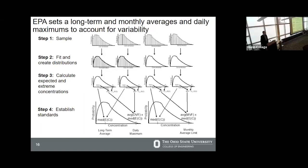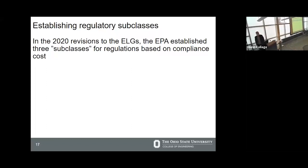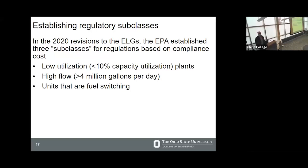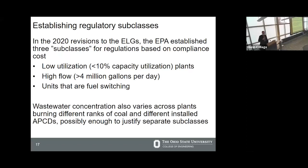The EPA also uses regulatory subclasses — types of facilities that for economic efficiency might need different treatment. In the 2020 revisions, the EPA established three subclasses: low-utilization plants using less than 10% of capacity, a single high-flow plant producing more than 4 million gallons of wastewater per day, and units retiring or fuel-switching by the end of 2028. We can use a model like this to explore other ways of thinking about regulatory subclasses — wastewater concentrations can vary across plants burning different ranks of coal and with different installed air pollution control devices, possibly enough to justify further subclasses.